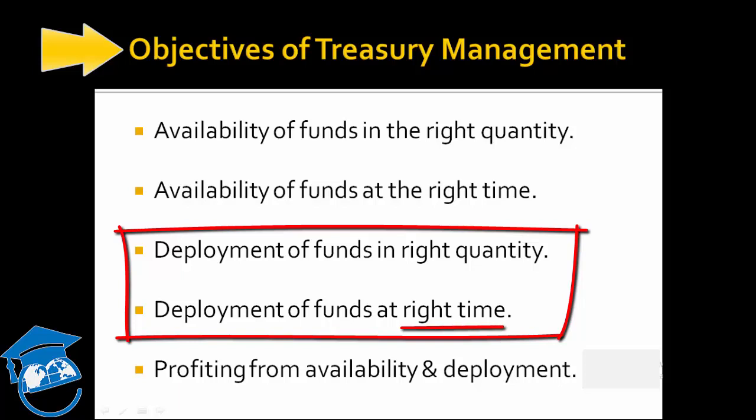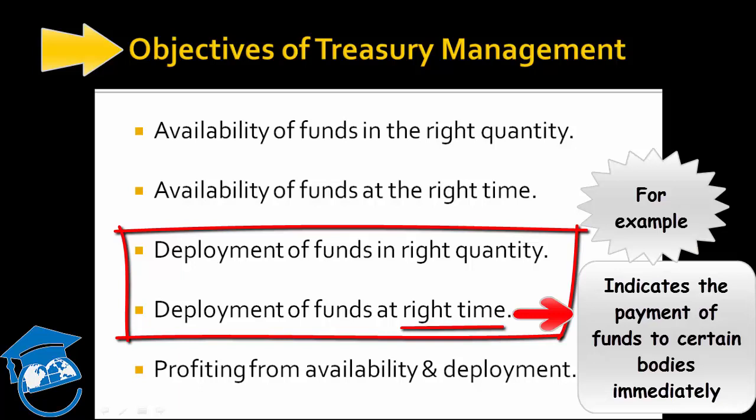There are certain payments which are to be made urgently — for example, tax payments which have to be done immediately, otherwise they will bring interest or penalty on the organization. Also, creditors and outstanding wages should be paid to avoid defaults.